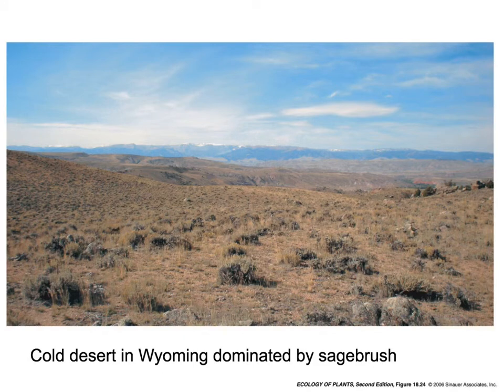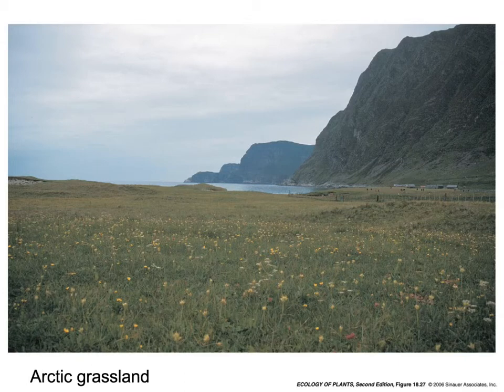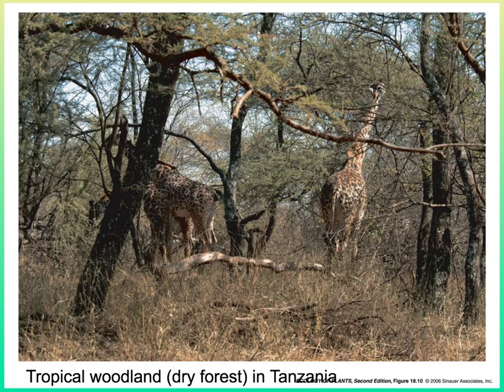Here's a cold desert in Wyoming — you can see not many tall plants, with the biggest plants being sagebrush. Here's a grassland in the Arctic in Alaska with lots of cotton grass and other short plants. Here's a tropical woodland in the dry forest of Tanzania with lots of large herbivores; consequently, many of the plants are spiny to protect their branches and leaves from too much browsing.